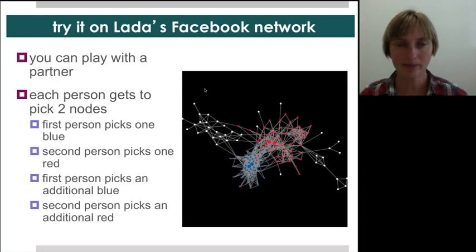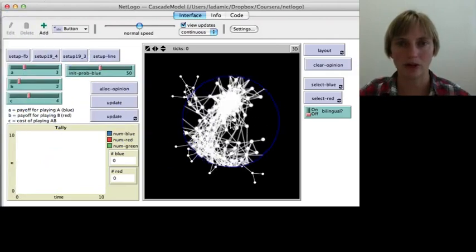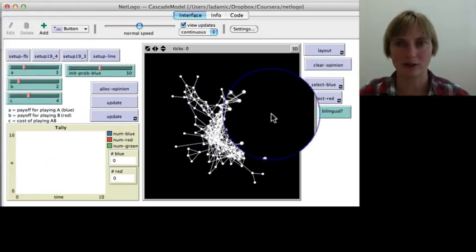And so, using the same app, you can kind of take turns, if you find someone to play this with, otherwise you can kind of play against yourself if you like. So you can take turns selecting which nodes you initially infect. And then you can see how the, what the payoff is as far as how many individuals eventually adopt your product, whether it's red or blue.